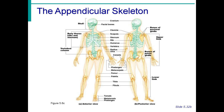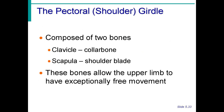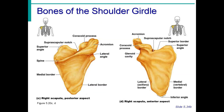The appendicular skeleton consists of 126 bones forming the upper and lower extremities. The shoulder girdle and arms have 64 bones, while the pelvic girdle and legs have 62 bones. The shoulder girdle is composed of two bones: the clavicle and the scapula. The scapula or shoulder blade supports the arm, while the clavicle or collarbone lies along a horizontal axis on the anterior superior aspect of the thoracic cage. These bones allow the upper limb to have exceptionally free movement.